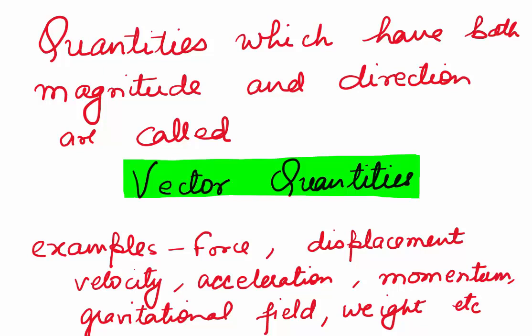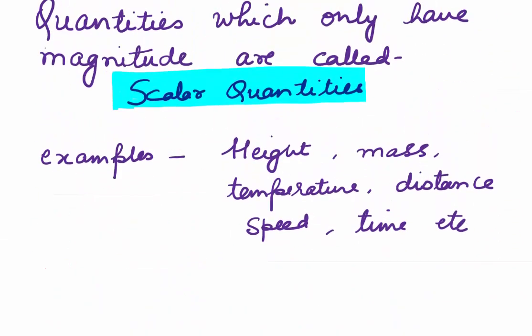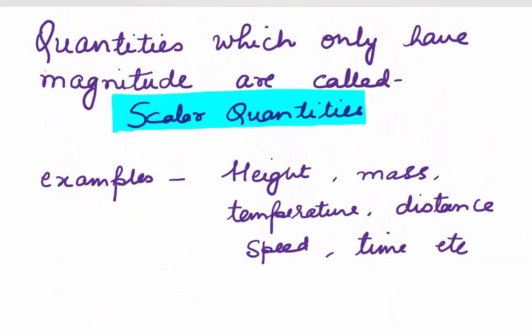So displacement, velocity, acceleration, momentum, gravitational field, weight, etc. are some examples of vector quantities where both magnitude and direction are involved. Whereas scalar quantities are those quantities where only magnitude is there.